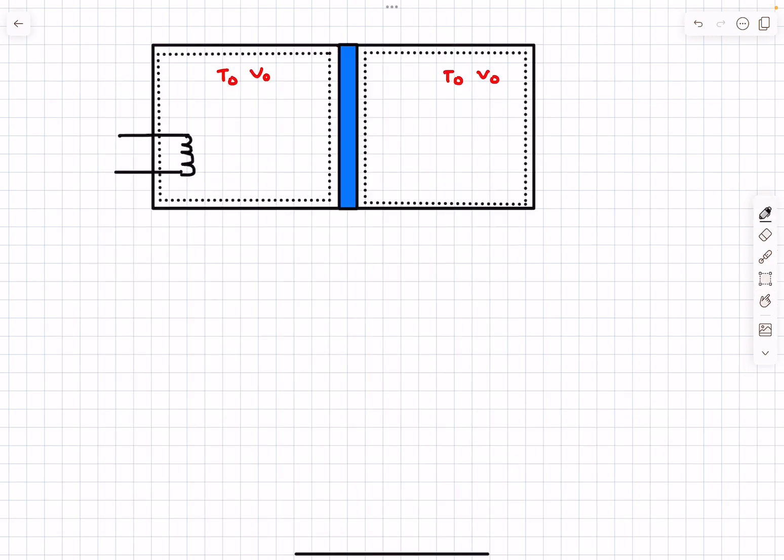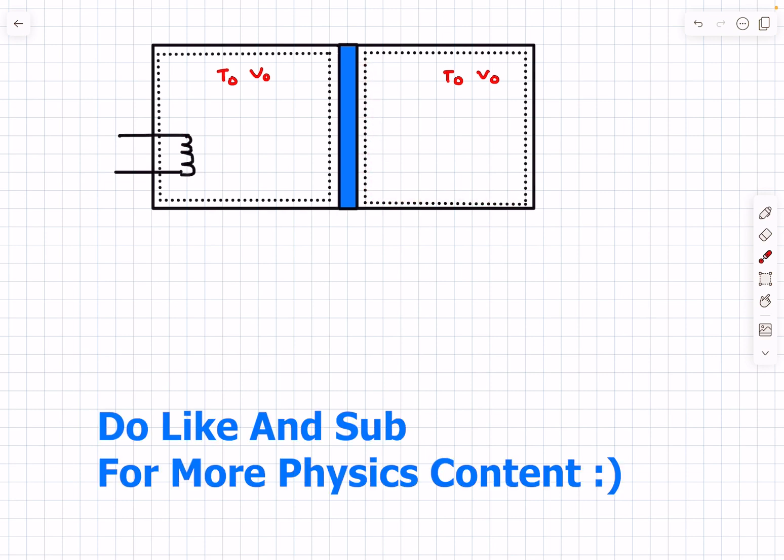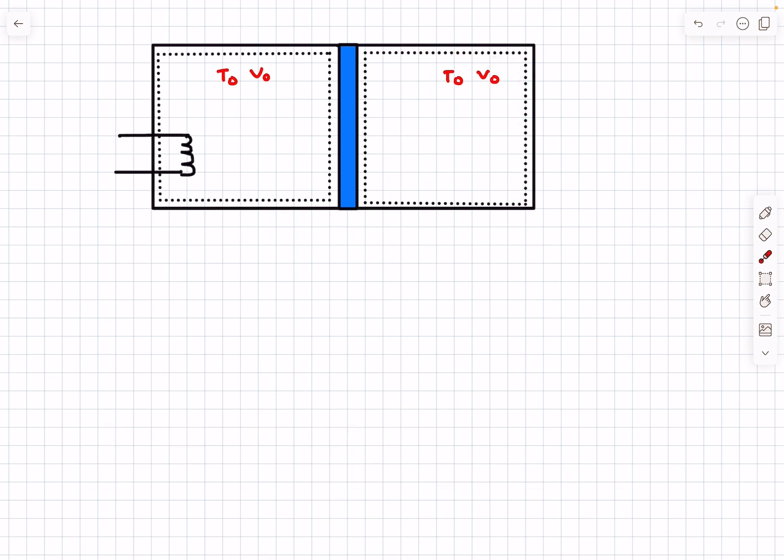So this is how the situation is looking initially. The dotted lines I've drawn represent the boundary of our system, which in this case is an ideal gas.